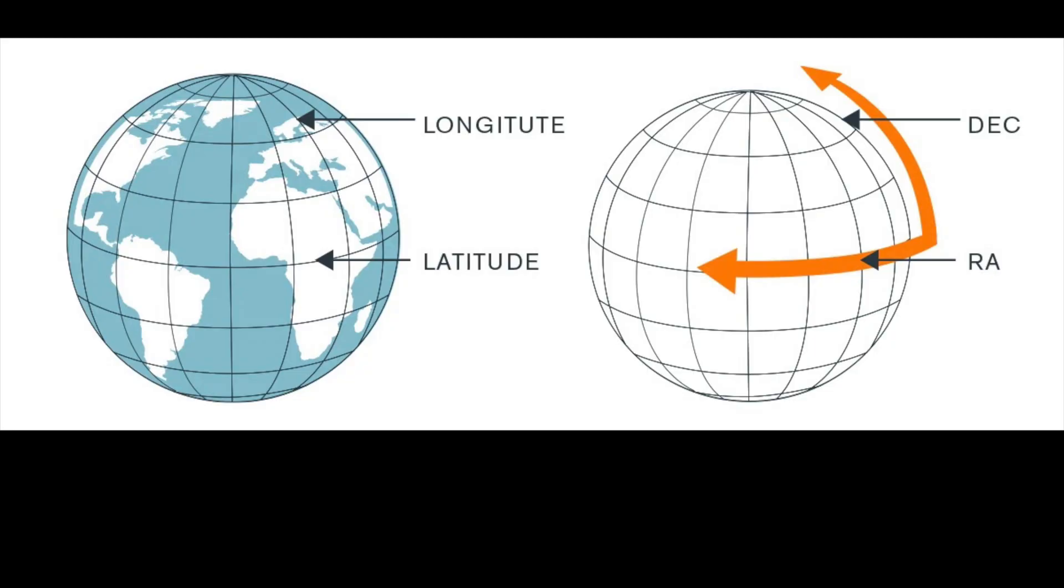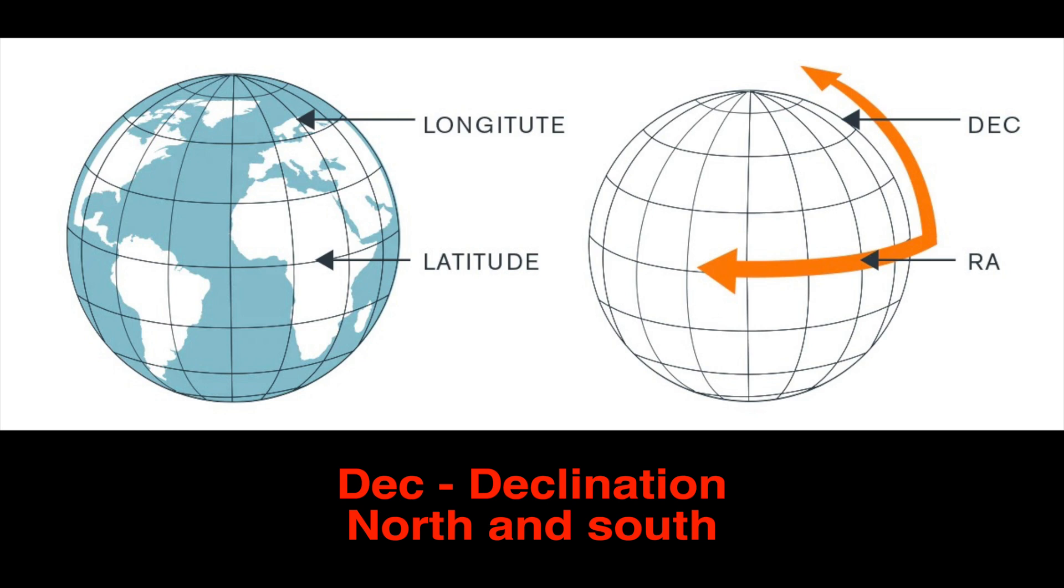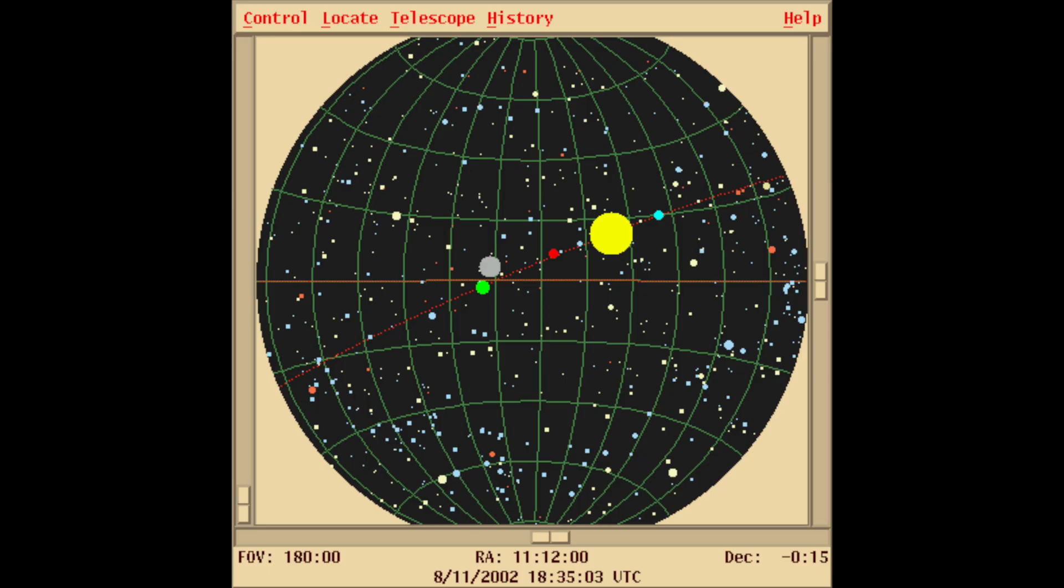DEC and RA are those two latitude and longitude values used to position any celestial body in a celestial sphere. RA stands for right ascension. RA measures east and west on the celestial sphere and is like the longitude on Earth, whereas DEC means declination - declination measures north and south and is like the latitude. The RA and DEC of an object specify its position uniquely on the celestial sphere, just as latitude and longitude do for an object on Earth's surface.